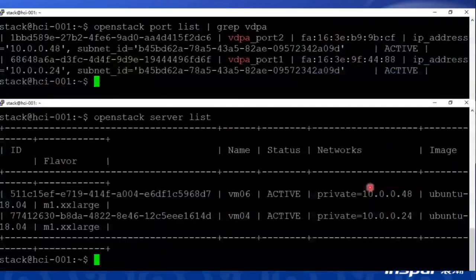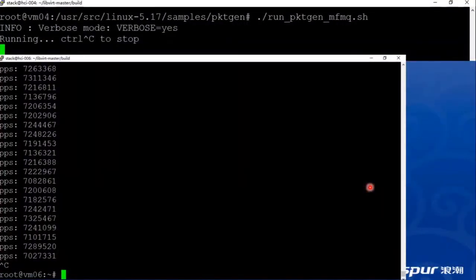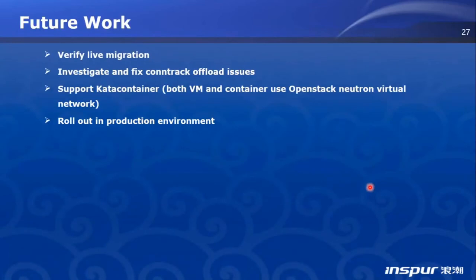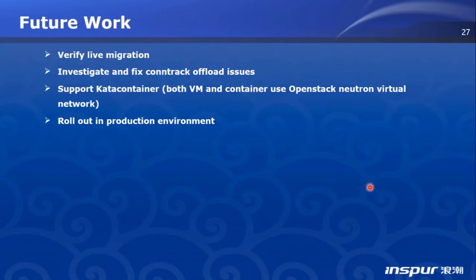In the future, we will verify live migration — current OpenStack cannot do live migration for SF, and I will hack OpenStack to support this. For the connection tracking offload issue, I asked the Mellanox team — they did support this for JD Cloud — but current SmartNIC can only support part of the CT states, and I will investigate and try my best to fix it. In addition, I will make sure Kata containers can also use SF. We plan to roll this out in our production environment once we have fixed all the issues.